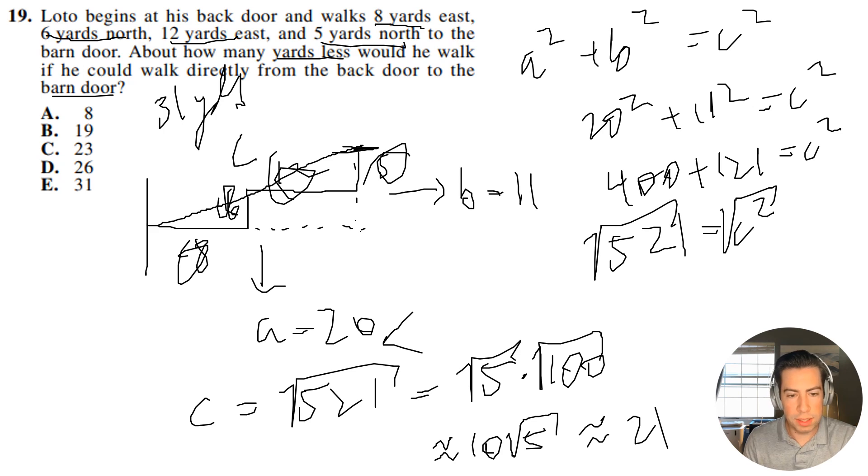Okay, so with this in mind, we want the difference, right? So don't pick answer choice C. I know it's tempting, but what we're going to do is it's going to be 31 minus 21. And this is going to give us 10. And 10 is approximately 8. And we can see that the other answer choices don't come anywhere near it. So our correct answer choice is going to be A.